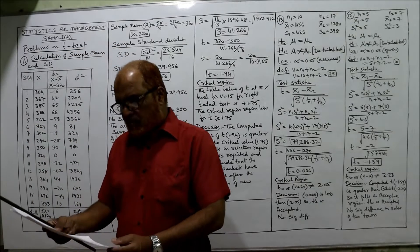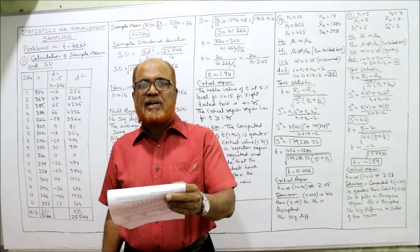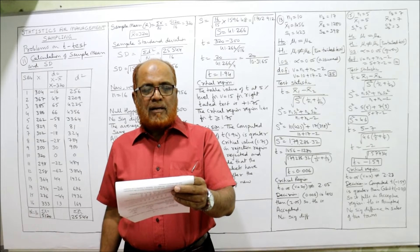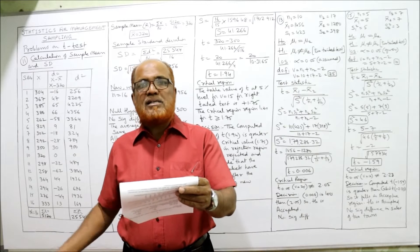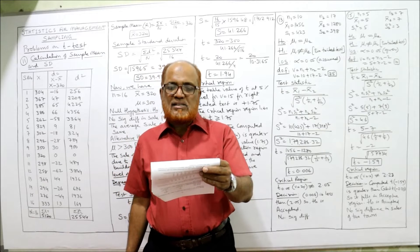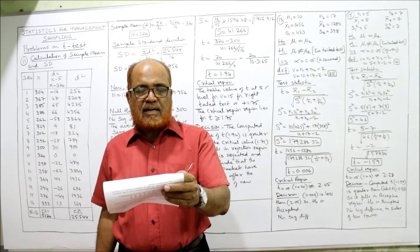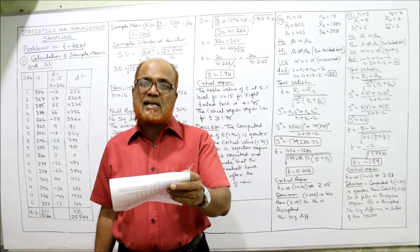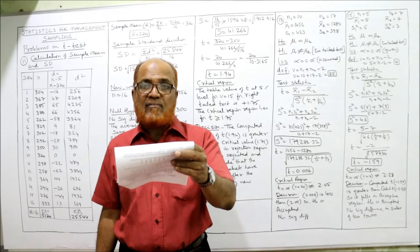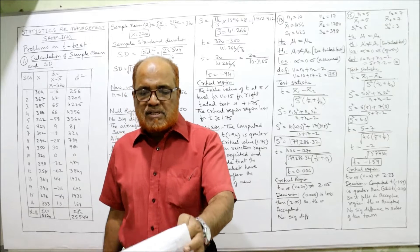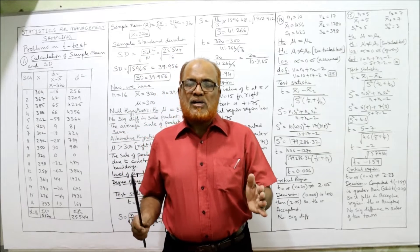Now see the 11th problem. Ashoka restaurant in the city has been averaging sales of 300 lunch packets per day. Due to construction of new building complexes in the nearby area, Ashoka restaurant expects to increase the sales. During the first 16 days after occupation of the building, the daily sales values are given — 304, 367, 385, 386, and so on — 16 sales values are given. Will you conclude that Ashoka restaurant sales have increased? Assume 5% level of significance.